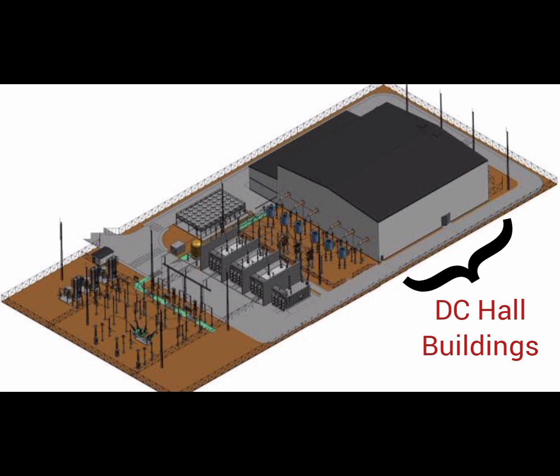DC hall buildings house the DC switching and filtering equipment, typically located indoors adjacent to the valve halls. Their purpose is to provide a controlled environment for the DC switching and filtering equipment and protect it from harsh weather conditions and other external factors.